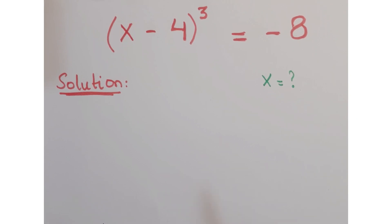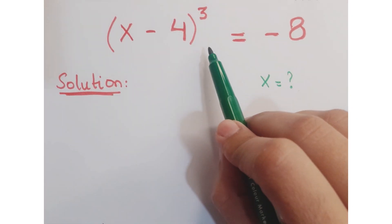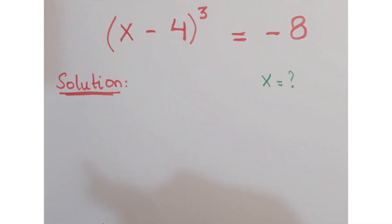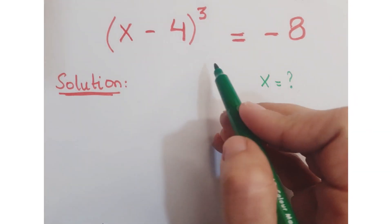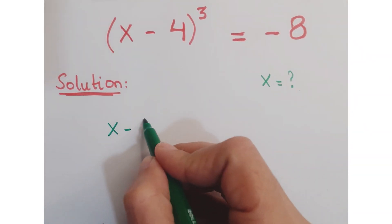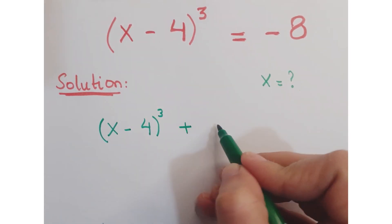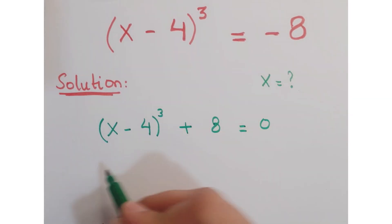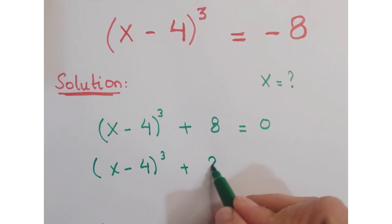Hi guys, look at this question. The question is x minus 4 whole cube equals minus 8 and we have to find the value of x. Let's see how we proceed in this question. Just move minus 8 on left hand side. So the sign gets changed into plus. You can write this 8 as 2 cube.